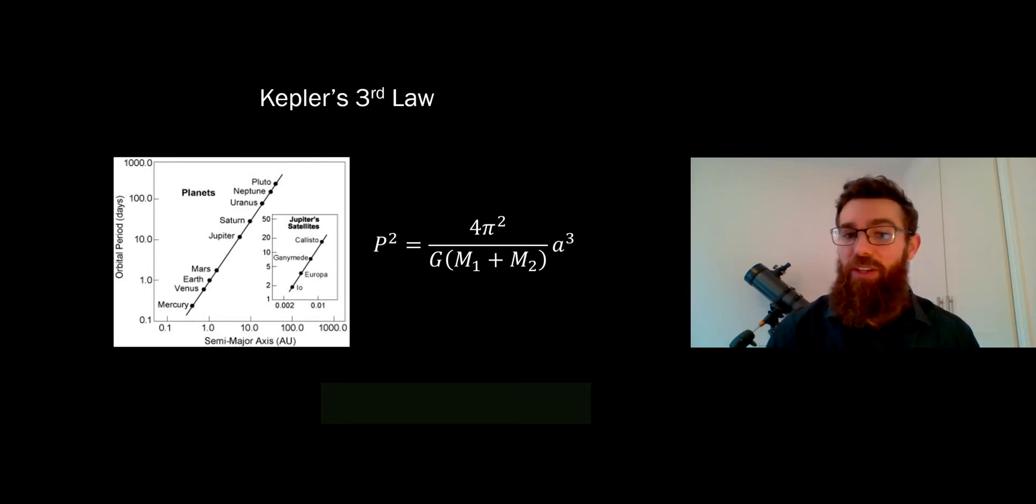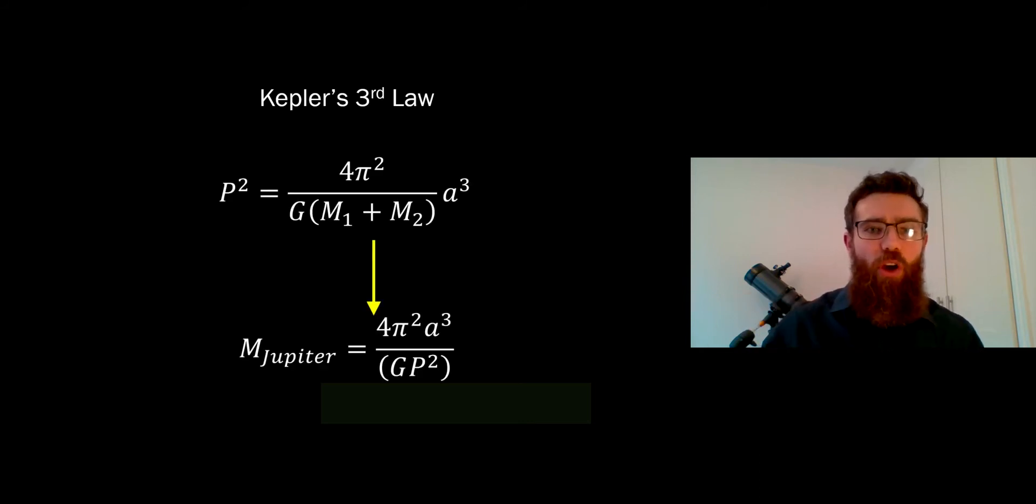Jupiter's satellites or moons follow the same relationship. If we can work out what the orbital period is and their semi-major axis, there's only one variable left in that equation, and that's the mass of Jupiter, which would be M1. M2 is actually the mass of the moon, but we will neglect that because it's very small. If we start with that equation for the orbital period, which is P, we can rearrange it for the mass of Jupiter. Here, like I said, I've taken out M2 because it's a very small mass.